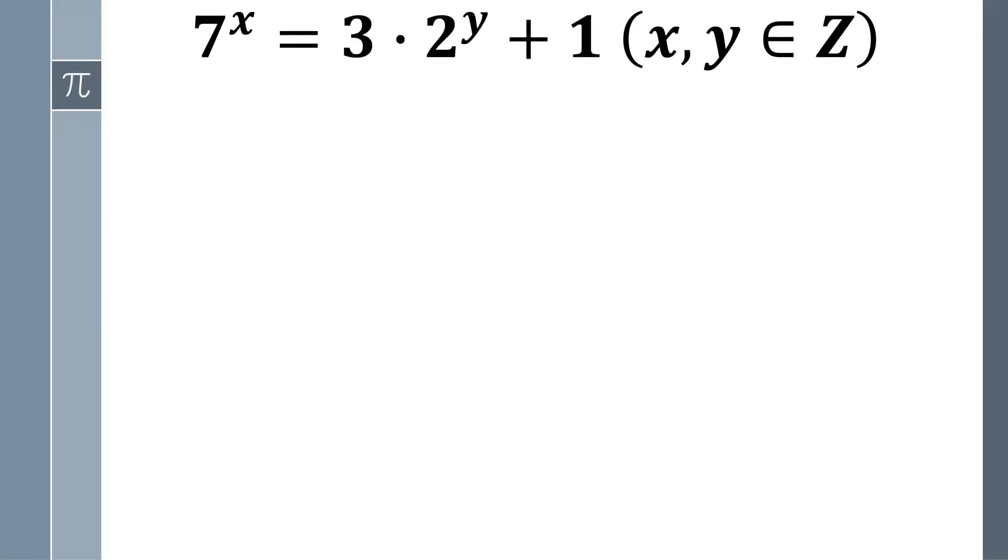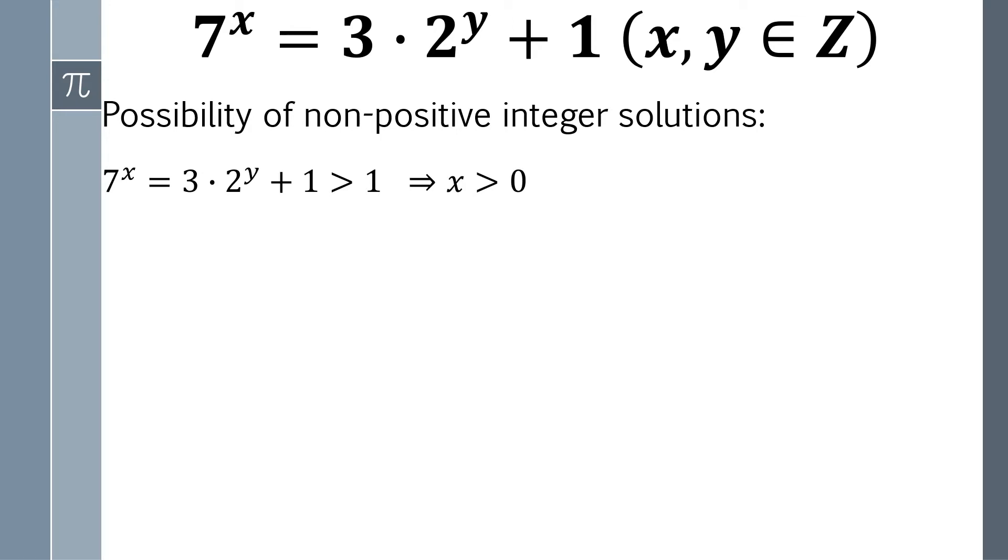Since the question doesn't say x and y are positive, that means we have to find out if there's any possibility that non-positive integer solutions exist. Demonstration of this part is not difficult. First of all, according to the equation, 7 to the x power is larger than 1, that means x is larger than 0.